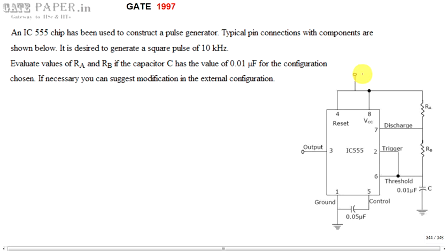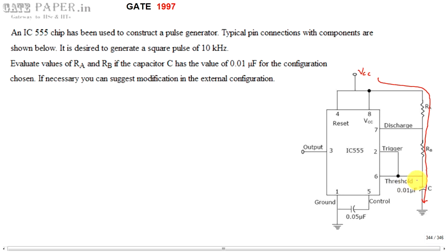This is VCC. If you know the internal diagram and the operation, it is very easy. The capacitor charges and discharges. The capacitor charging path goes through RA, RB, and C towards VCC. The discharge path is different — the capacitor discharges through this path towards ground. So this is the discharge path.